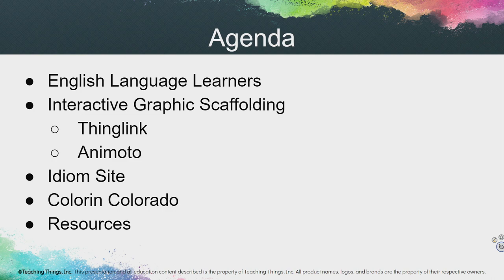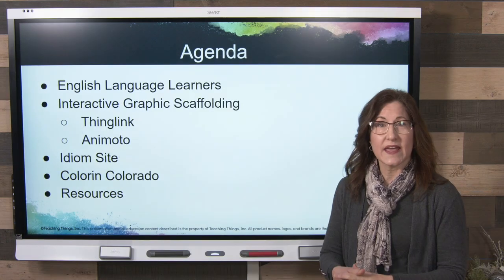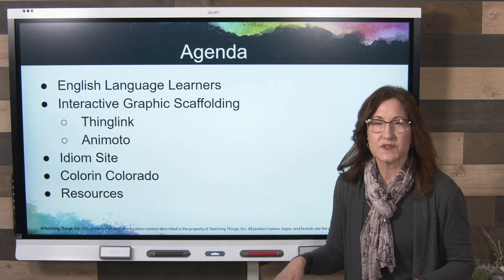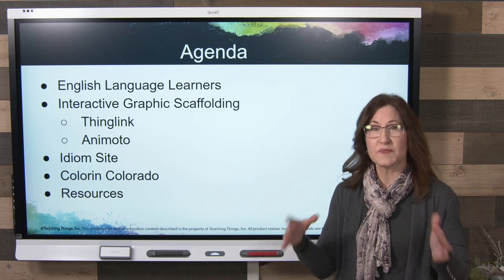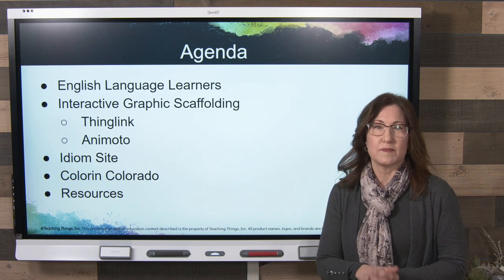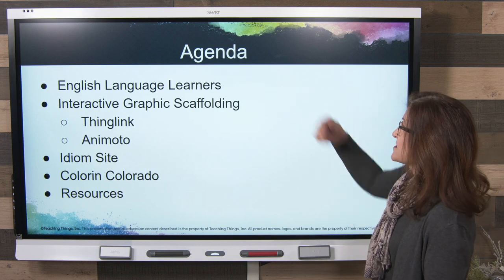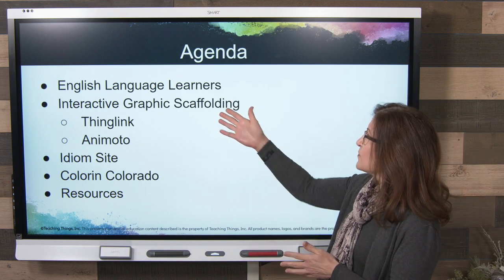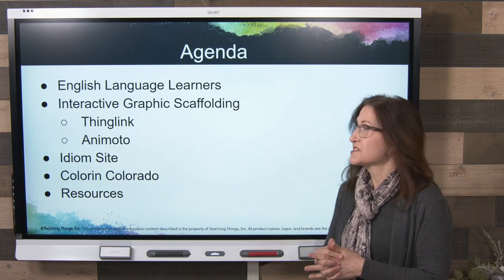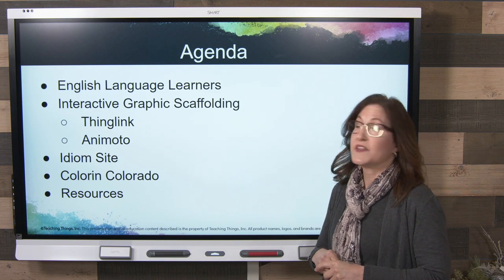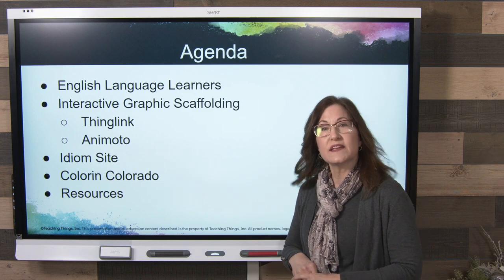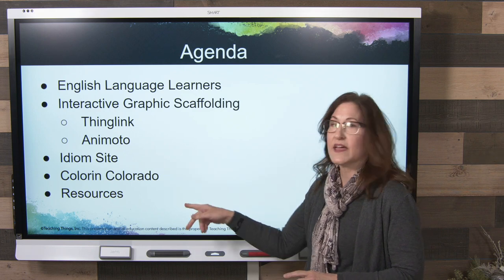Here you see our agenda for today's course. Today's course focuses on web resources for ELs, particularly at the middle school and high school level. I'm going to be going into a couple of web resources that can be used for all grade levels, but we're focusing on middle school and high school. First we'll discuss English language learners, then we'll focus on interactive graphic scaffolding — specifically ThingLink and Animoto — and then we'll take a quick look at Idiom Site and Colorín Colorado.